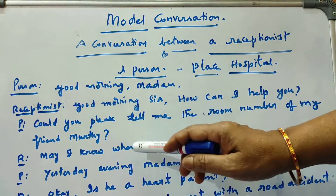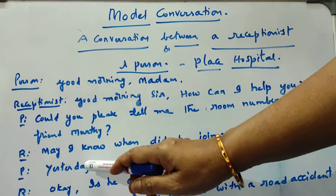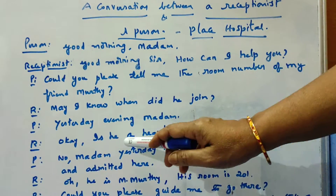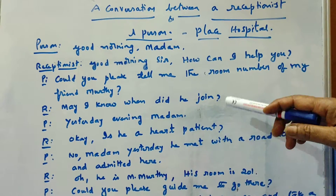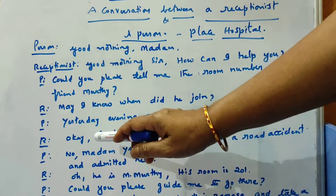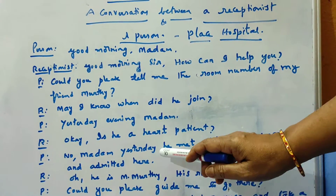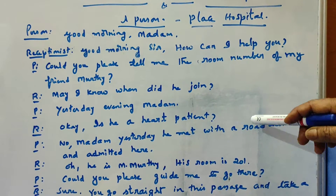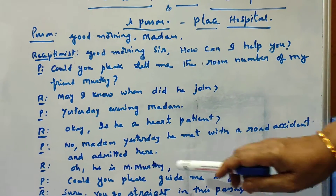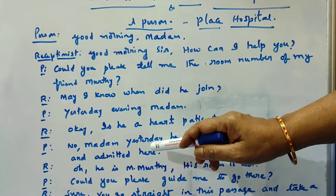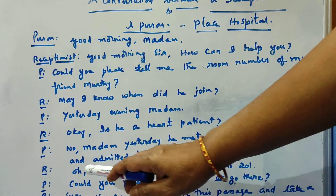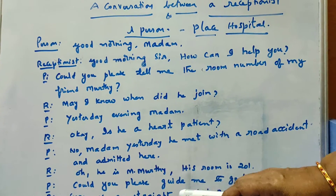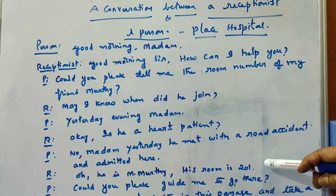Receptionist: 'May I know when did he join?' Person: 'Yesterday evening, madam.' Receptionist: 'Is he a heart patient?' Person: 'No madam, yesterday he met with a road accident and was admitted here.' Receptionist: 'He is Mr. Murti. His room is 201.'